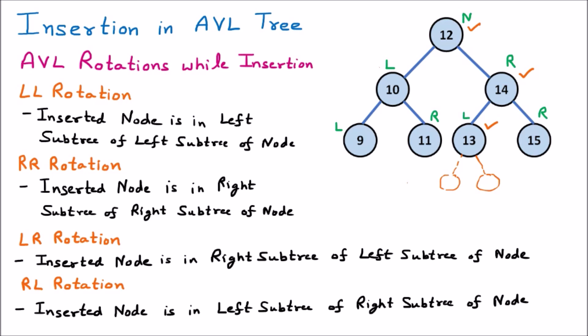These are the four types of rotations applied during insertion. One important thing to understand is that LR and RL are more complex compared to LL and RR rotations. LR and RL are called double rotations, while LL and RR are called single rotations. That is all about the rotations while inserting into an AVL tree.